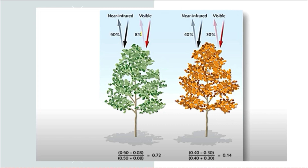Inversely, in the case of the tree on the right, it's struggling to survive — whether it's lack of water, poor soil conditions, or the time of year. In the case of this vegetation that is under stress, the visible component has increased very significantly, and because chlorophyll content has reduced, the near infrared reflection by the vegetation will reduce, and therefore our NDVI index becomes only 0.14.